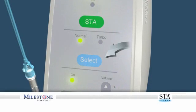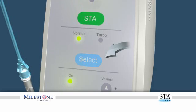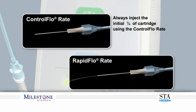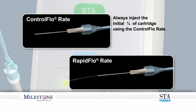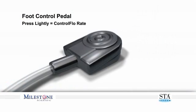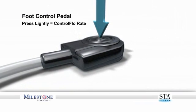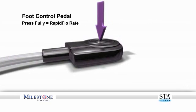Set the STA system to the normal mode, which allows the STA system to function with two distinct flow rates: the control flow and the rapid flow rate. We recommend using the control flow rate for the first quarter of the cartridge for all initial phases of infiltration and block injections. Depressing the foot control pedal lightly allows you to enter the control flow rate; fully depressing the foot control allows you to enter the rapid flow rate. There is a corresponding beeping tone to distinguish these two rates that you will hear.